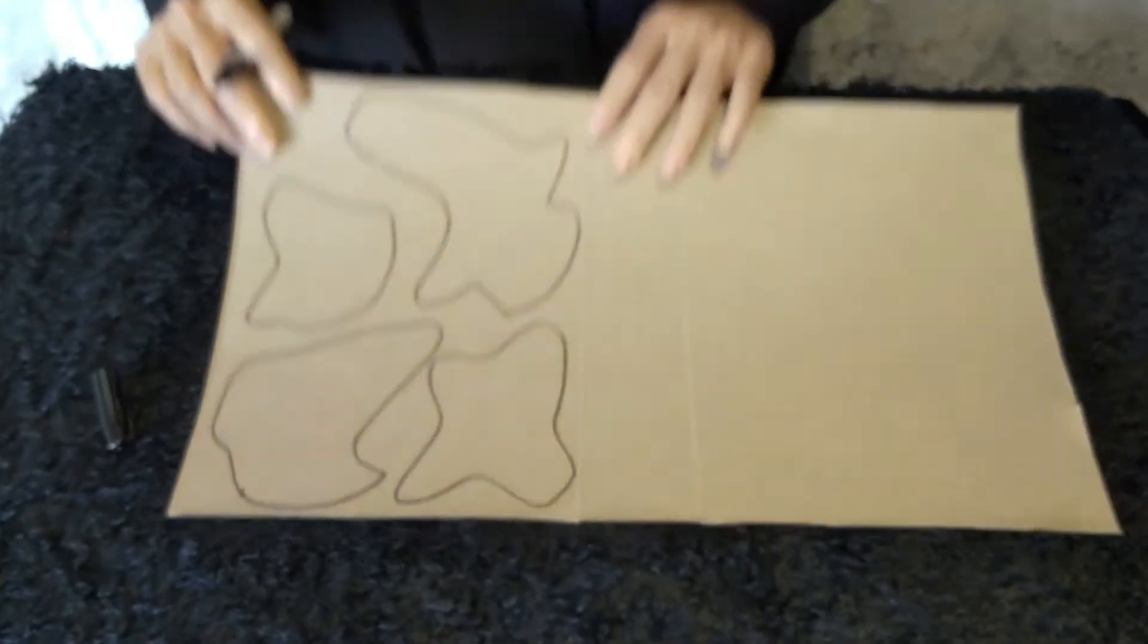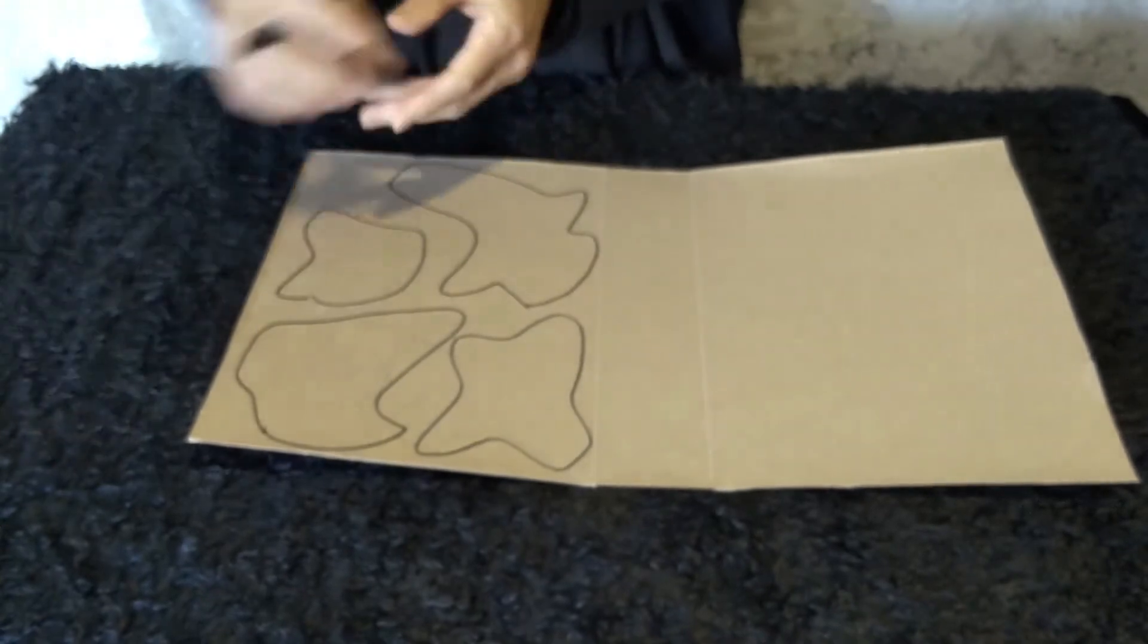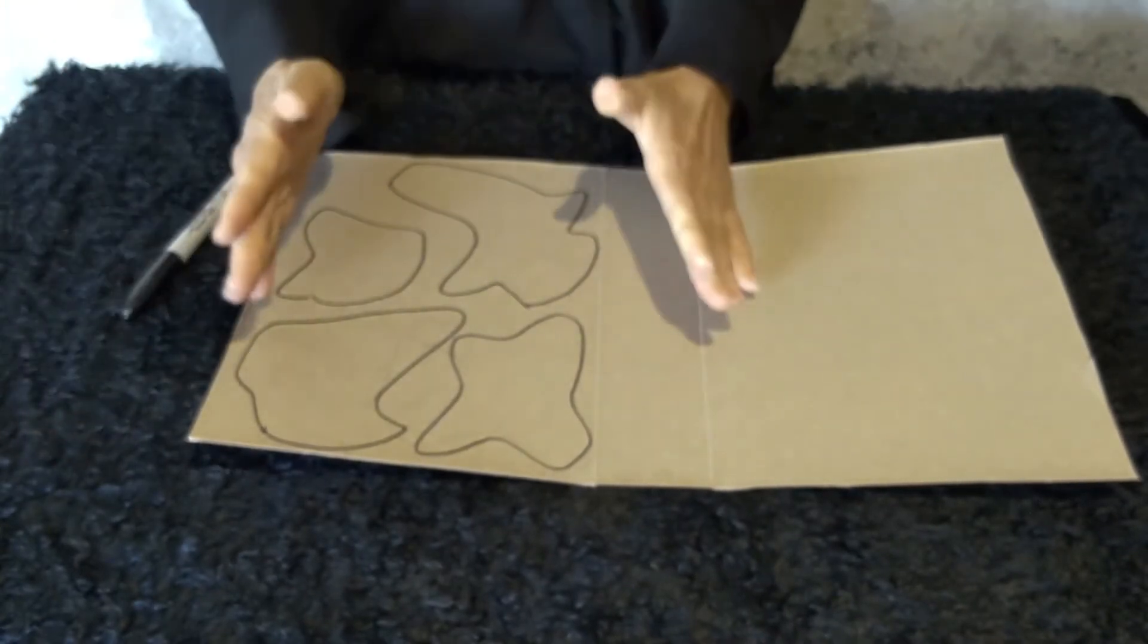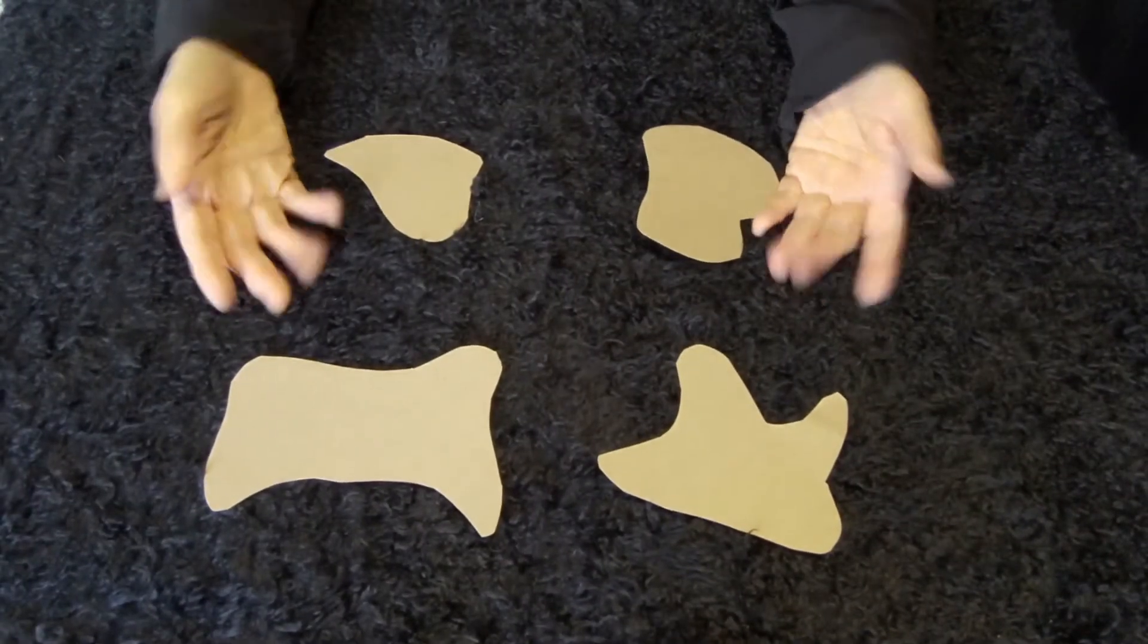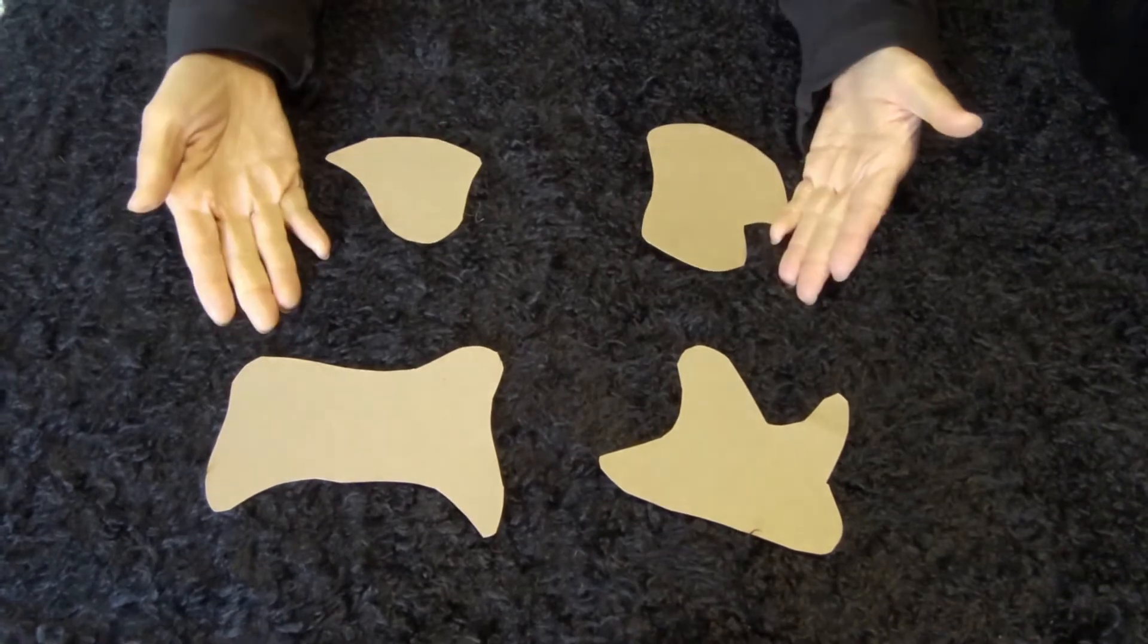So now I just draw four random shapes. After that, we're going to cut them out and the magic will happen after that. So these are my shapes. Let's find out what could they be.